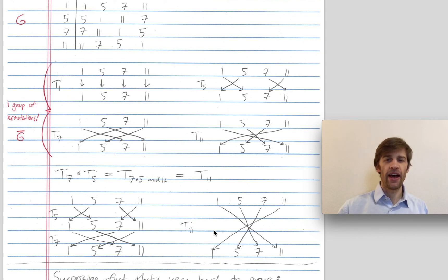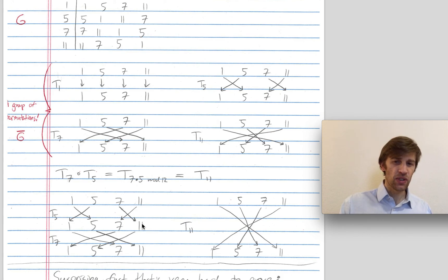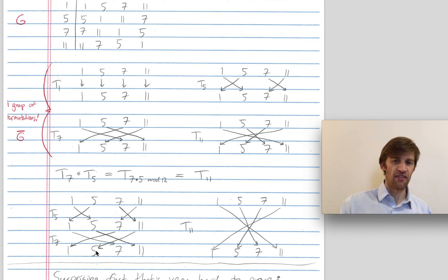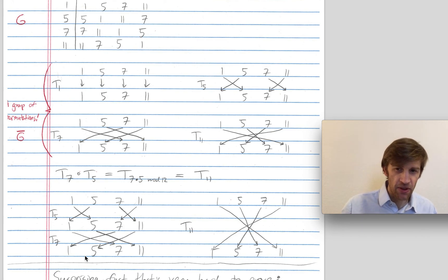And you shouldn't be surprised by that, because remember, doing T5 was just multiplying by 5. So for example, 7 mapped to 5 times 7, which is 35, or 11 mod 12. And then doing T7 was just multiplying by 7, so 11 mapped to 77, which is 5 mod 12. But in total, I multiplied by 5 and then by 7 — in total I multiplied by 5 times 7, or 35. But 35 is 11 mod 12. So multiplying by 5 and then by 7 is just the same as multiplying by 35, or multiplying by 11 mod 12.